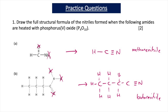When methanamide is heated with P4O10, you lose the two hydrogens of the NH2 group and the oxygen of the C=O, leaving a nitrile. The nitrile formed is methanenitrile: H bonded to a carbon with a triple bond to N. For part B, butanamide similarly loses NH2 and C=O to give butanenitrile: CH3 bonded to CH2, bonded to CH2, then C≡N. One mark for each correct product.